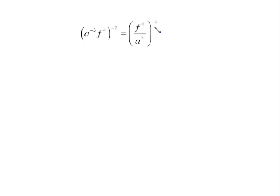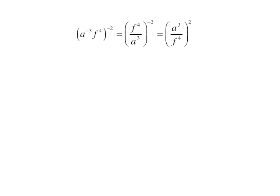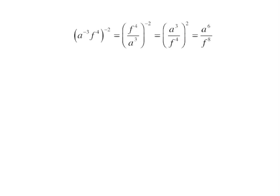A fraction raised to a negative power. Here's where we're going to use our rule. Flip that fraction upside down and now it's to a positive 2. At this point we can just use the power property which tells us to multiply the 2 times each of those exponents and we get a to the 6 over f to the 8.